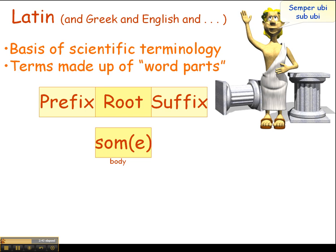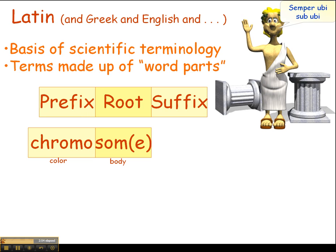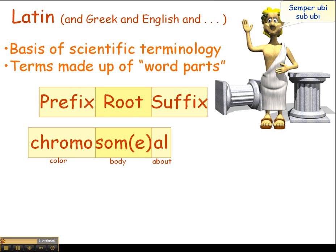Let's take a look at an example. 'Soma' can mean body — like a small structure or body within a cell or somewhere in an organ. But if we add a prefix in front of it, it means something different. 'Chromosome' — 'chromo' means color — so it literally means colored body. Chromosome is the term we give to those highly stained bodies within the nucleus, made up mostly of DNA. We can also add a suffix to change its meaning again. The '-al' suffix means about, changing the word from a noun to an adjective. 'Chromosomal' means something pertaining to a chromosome.